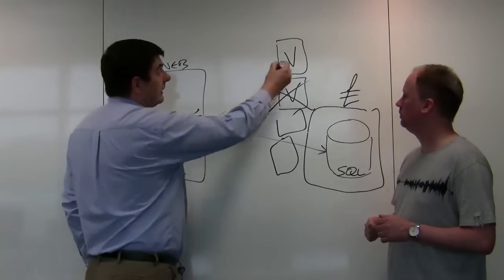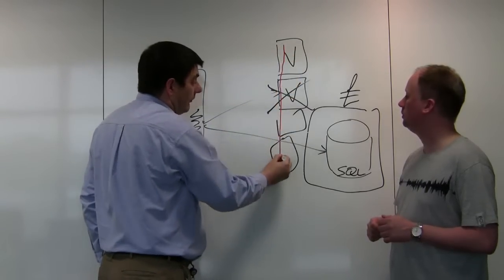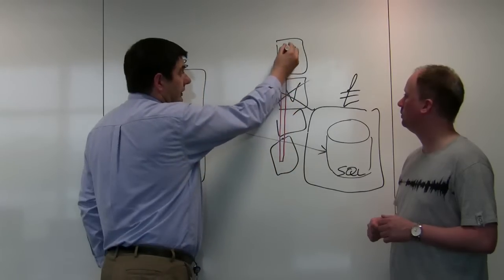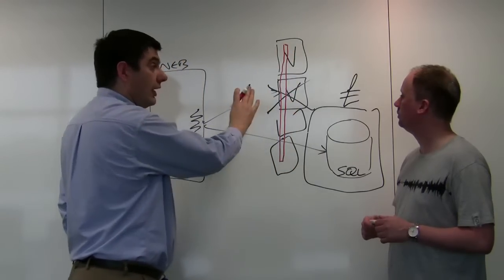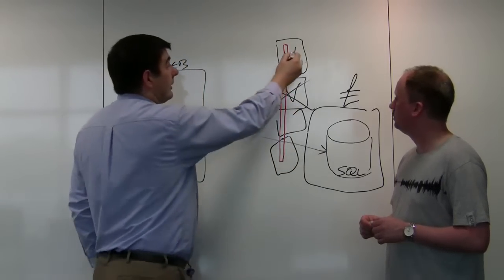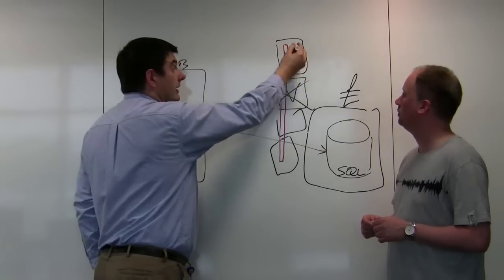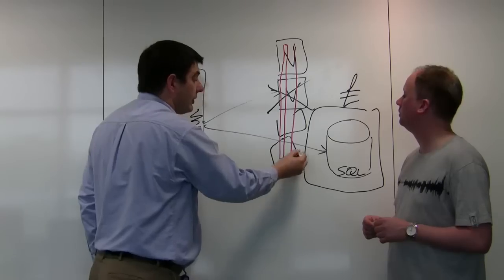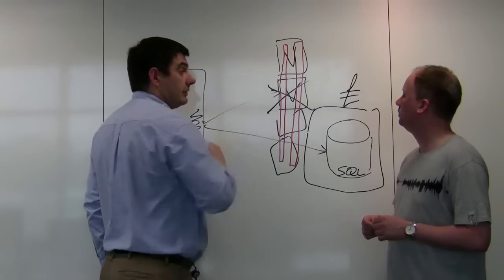So you can imagine you might have one cache running logically across these machines, which is not highly available. And another cache, because you have a different type of data that you run across the machines, which is highly available.